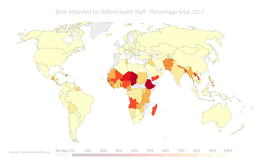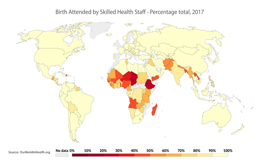Even in current times we have relatively modest provision of skilled attendant care at childbirth in some parts of the world. The red and maroon areas in sub-Saharan Africa and parts of Asia show where coverage of skilled birth attendants is low. Since 2000, significant progress has been made, rising from 63% coverage in 2000 to 80% now. However, the distribution is uneven and there are concerns about the overall quality of care even in the hands of skilled birth attendants.